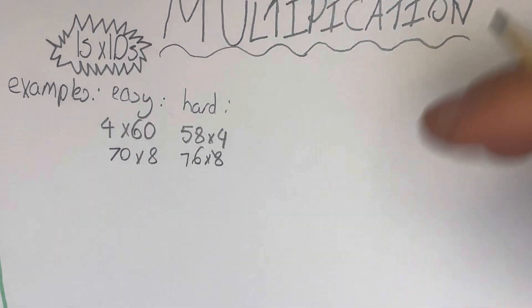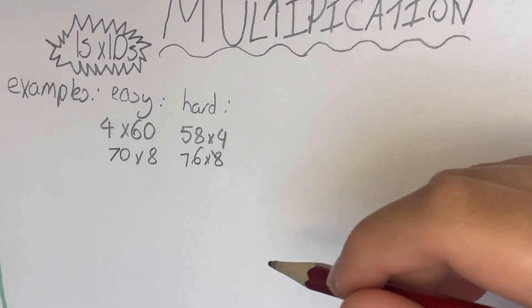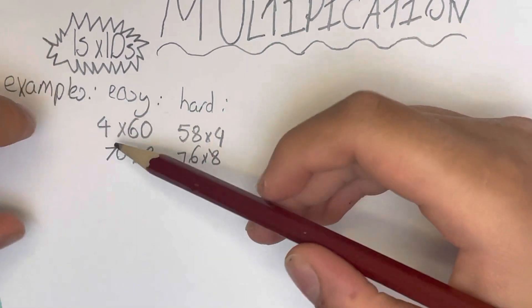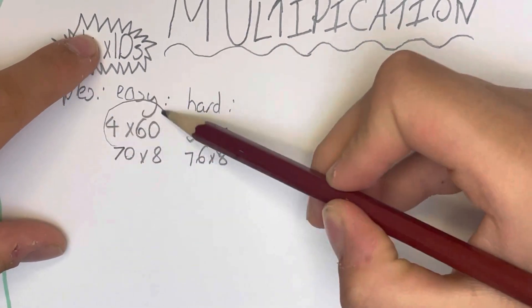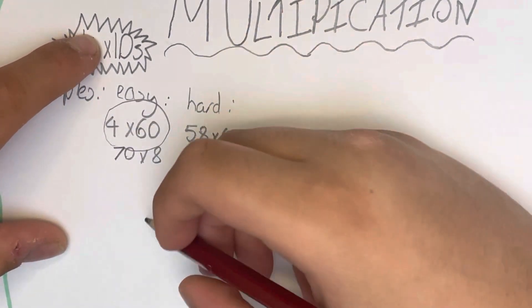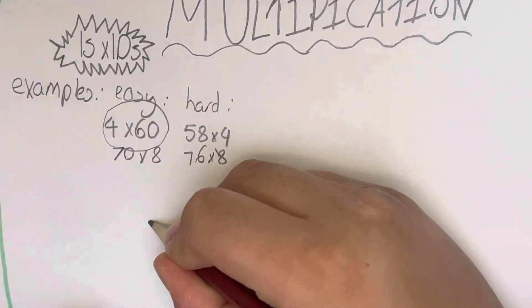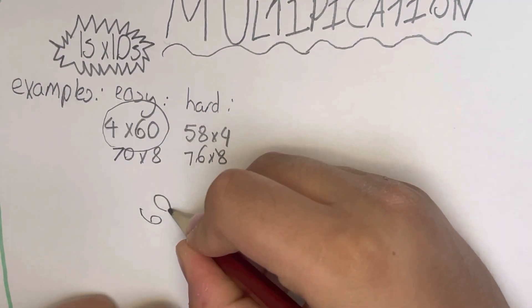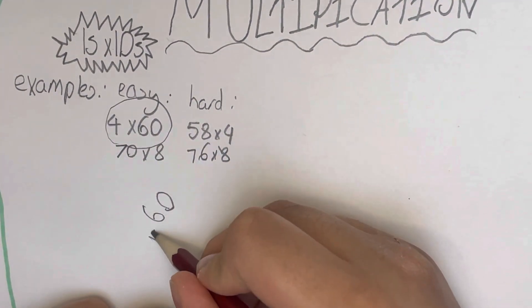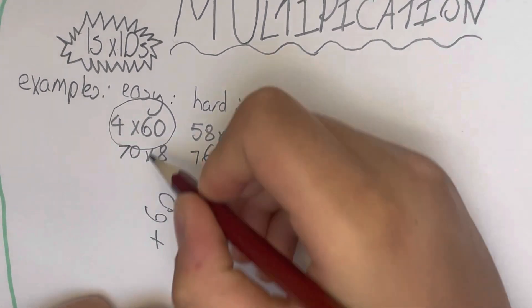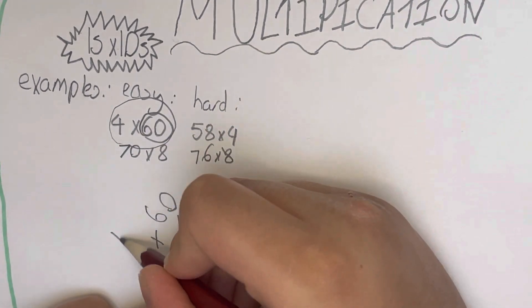Starting off with the easy ones, 4 by 60. So you've got 60 and then you've got 4. As you can see, I'll put 60 in the first row and I'll put 4 in the second row.